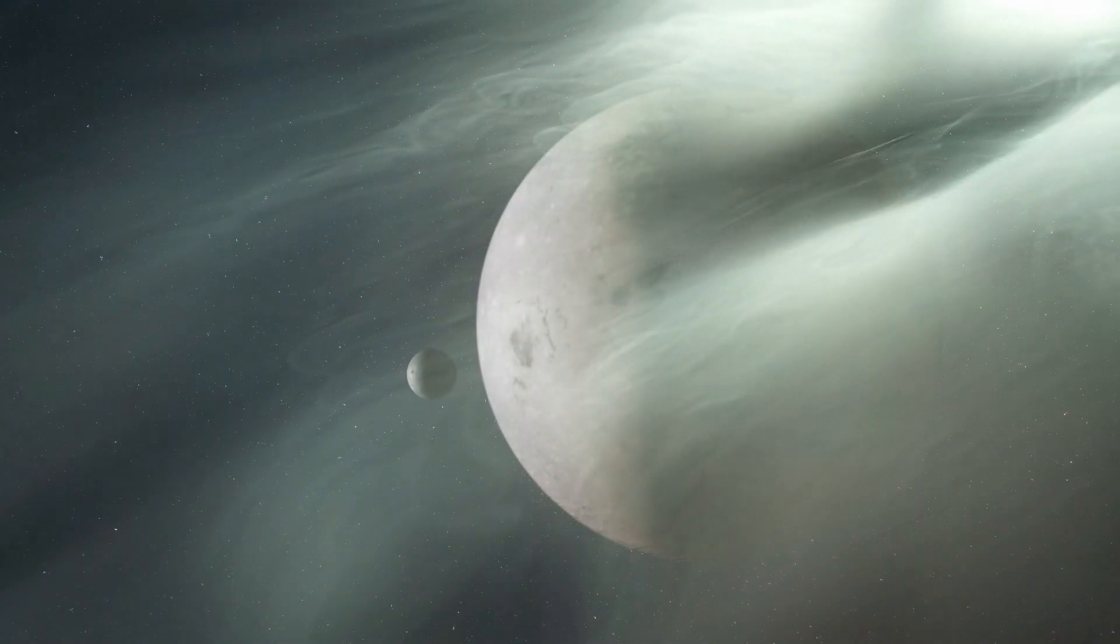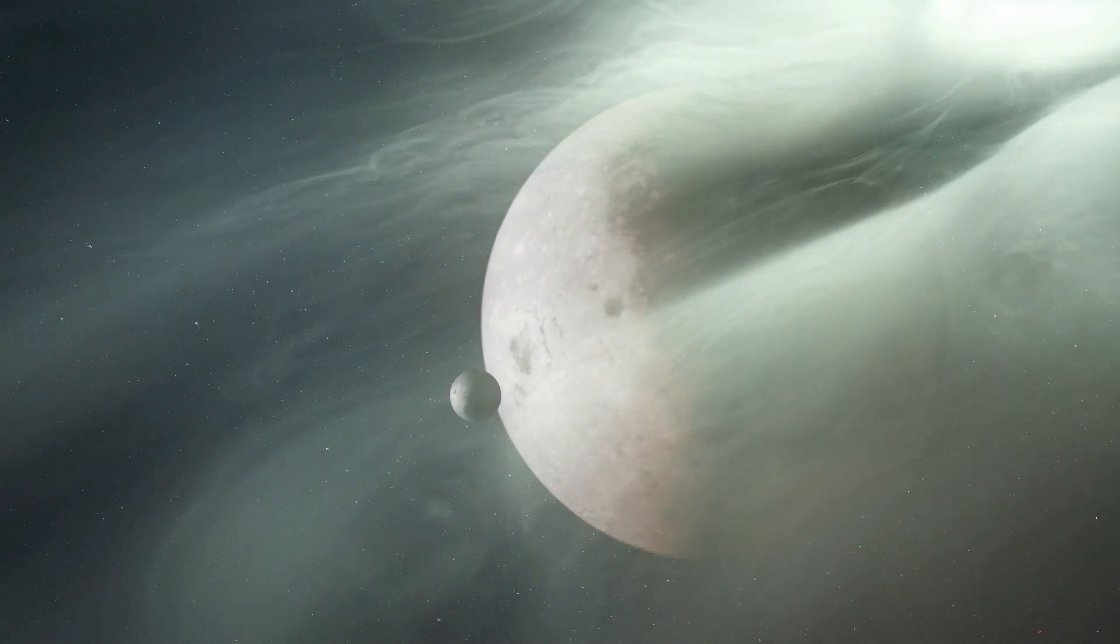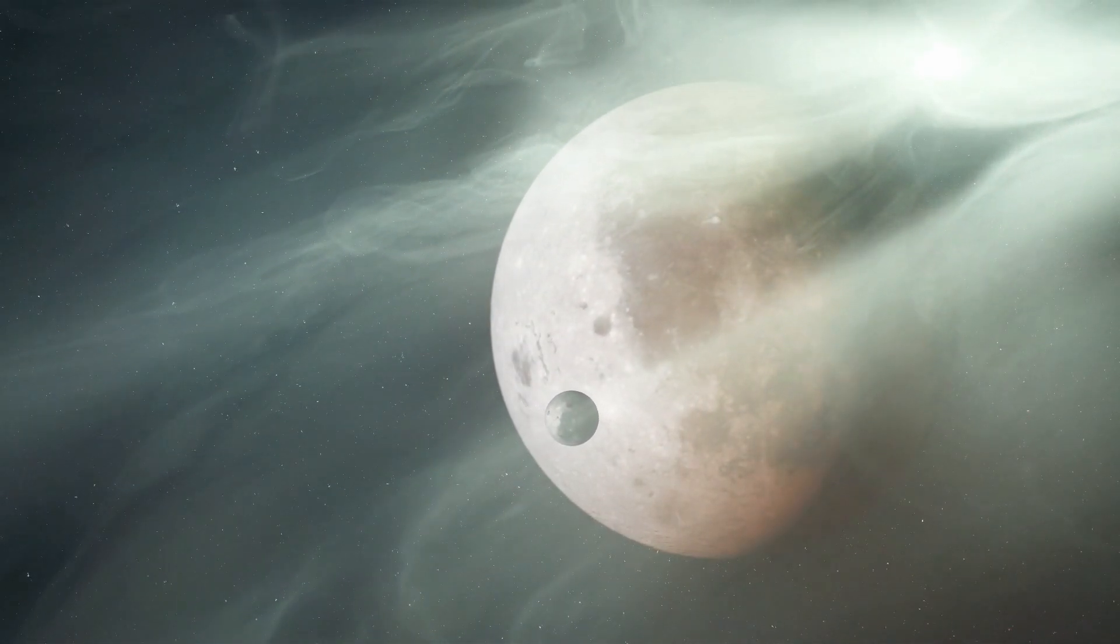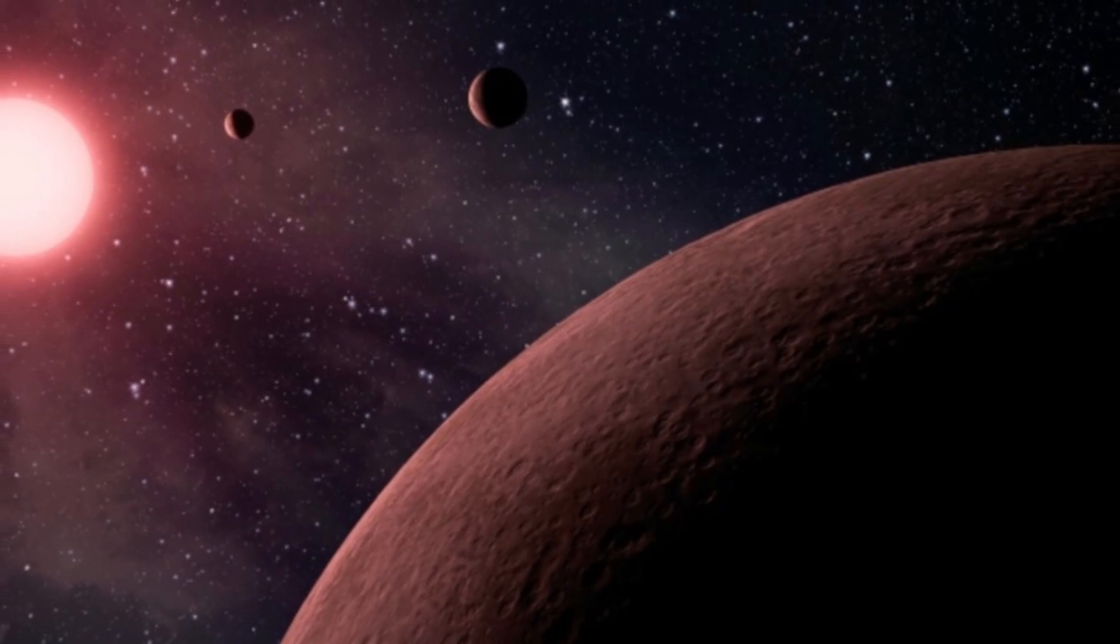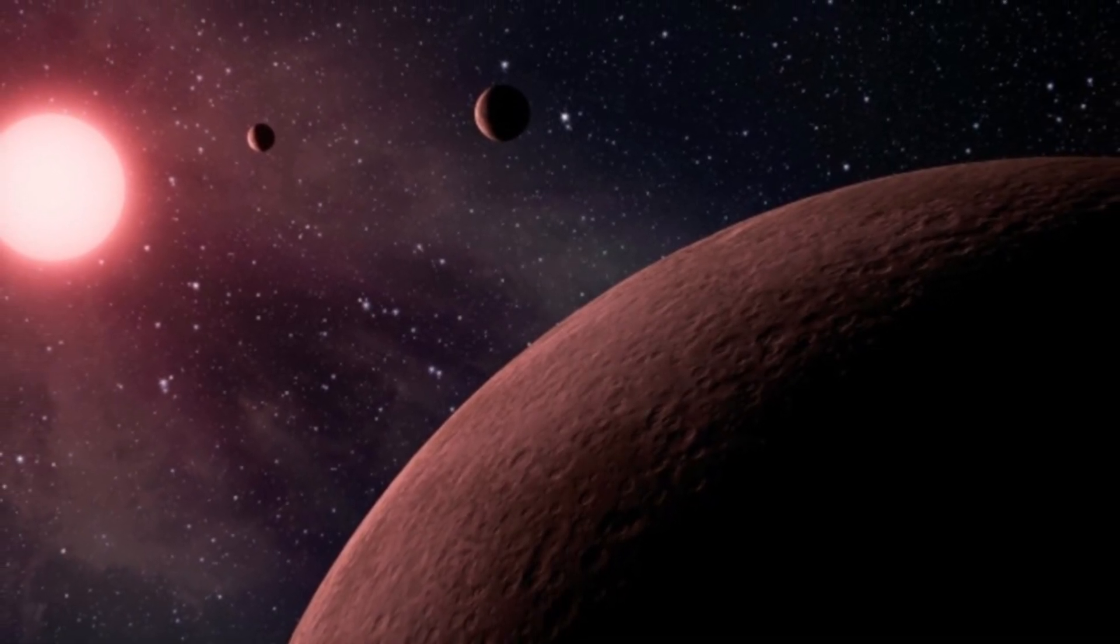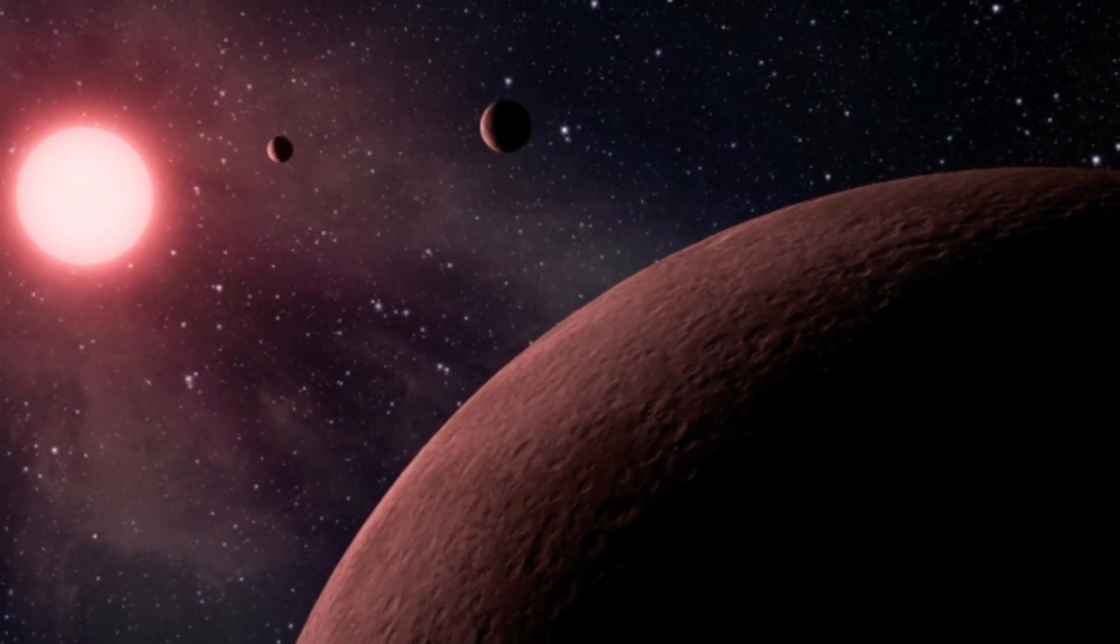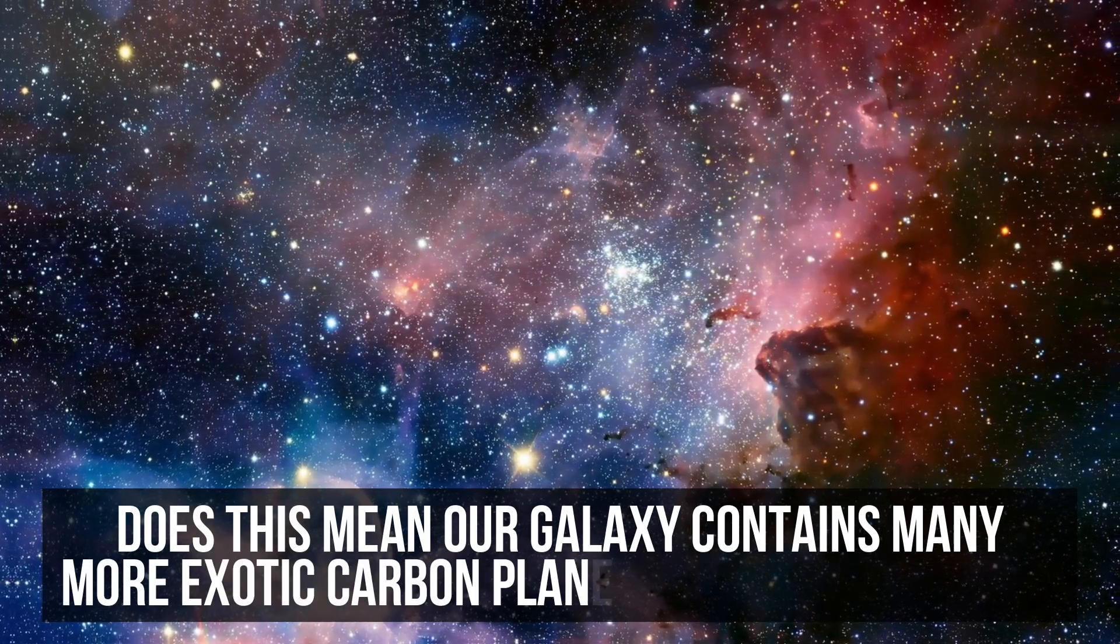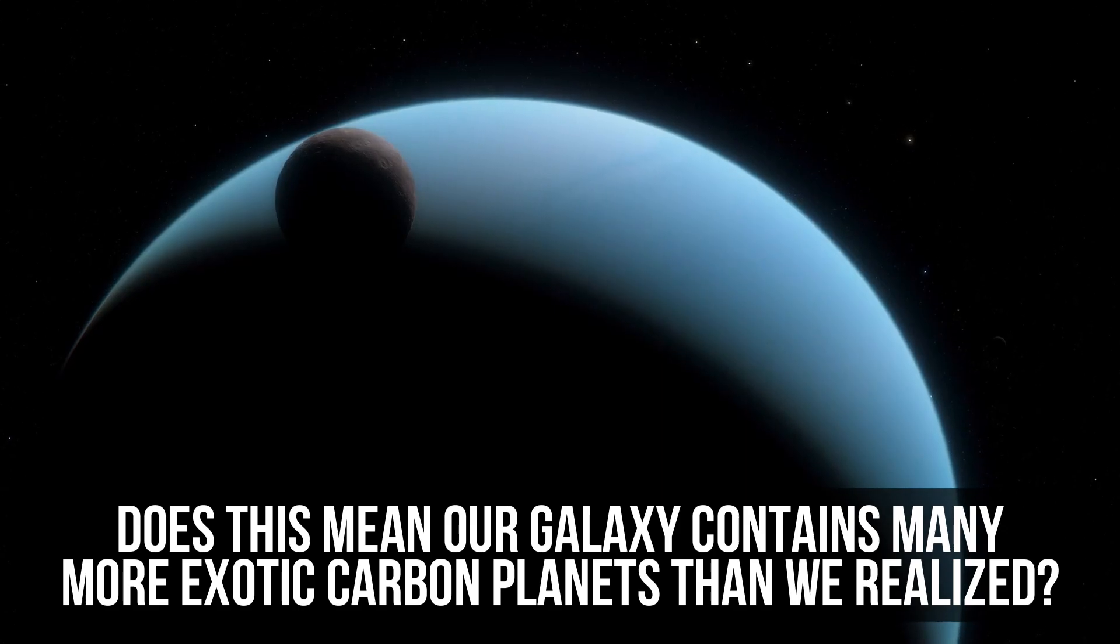Prior to this discovery, theoretical models suggested that carbon-rich planets could exist, although they were considered highly uncommon. Finding one now raises so many new questions about how these ruby worlds take shape. Does this mean our galaxy contains many more exotic carbon planets than we realized?